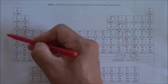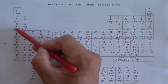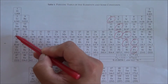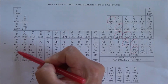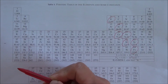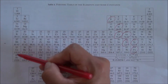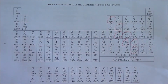The first group — lithium, sodium, potassium, rubidium, cesium, francium — are called alkali metals. They will form plus one simple cations. The second group is called alkaline earth metals. They will form plus two simple cations.